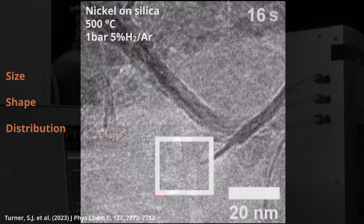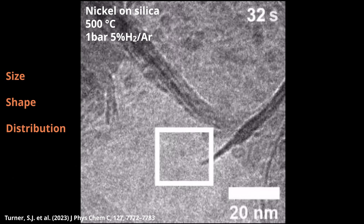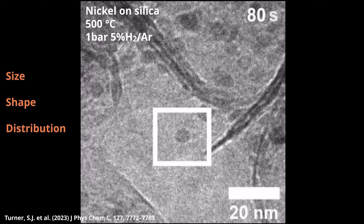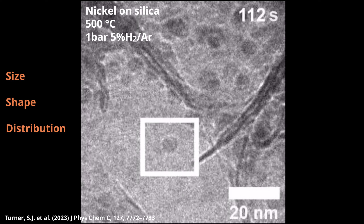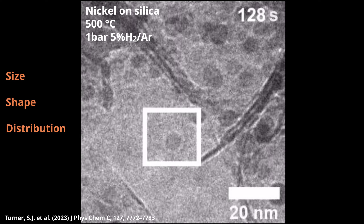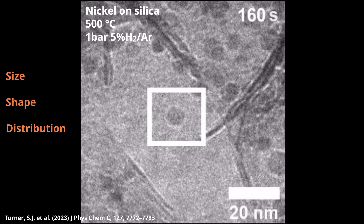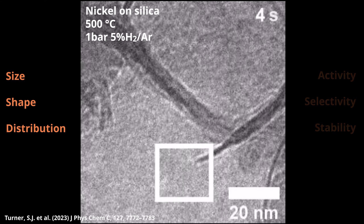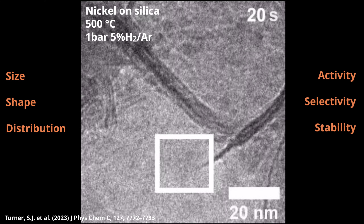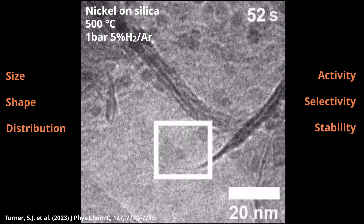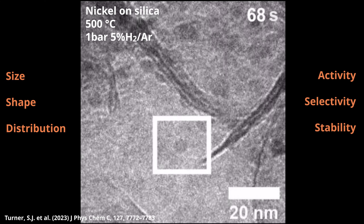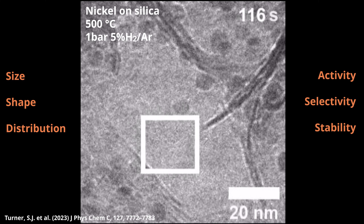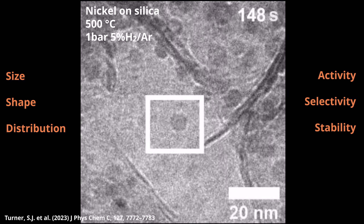For example, in this work by Turner et al. from the University of Utrecht, the synthesis of a supported nickel metal catalyst was investigated in an effort to obtain more control on the nanoparticle size, shape, and distribution. With in situ TEM, the researchers were able to determine the kinetics behind the formation of these supported catalysts, which in turn can lead to improved activity, selectivity, and stability.